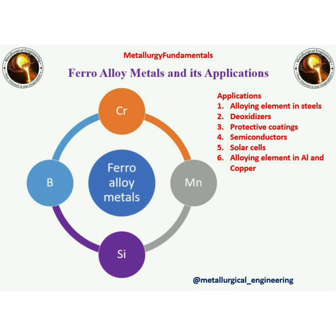Ferro-alloy metals are the last category of non-ferrous metals. Examples include chromium, manganese, boron and silicon. These metals are used in steel industries as a deoxidizer and in protective coatings. Silicon is used in making semiconductors and solar cells. Manganese is used as an alloying element in aluminium and copper.